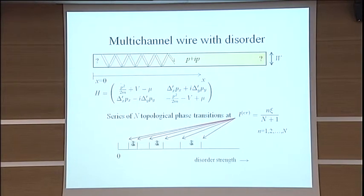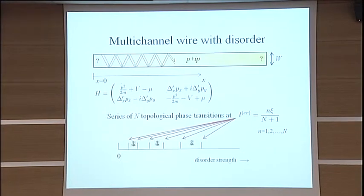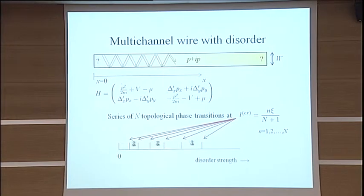If you, in this model, add disorder, you'll find that for N channels, you have a series of N topological phase transitions, meaning that N times you go from a system with Majorana to without Majorana, to with Majorana, to without Majorana.